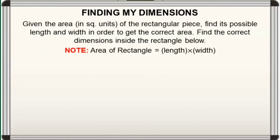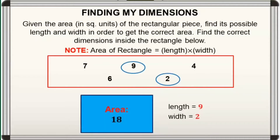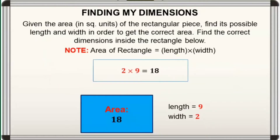So for the first one — Correct! Length is equal to 9 and width is equal to 2. Dahil, pag-mi-multiply natin, 2 times 9 is 18.